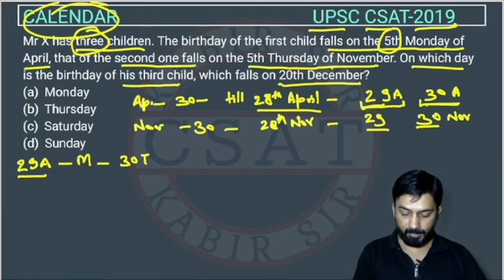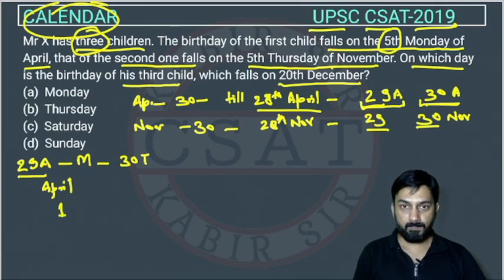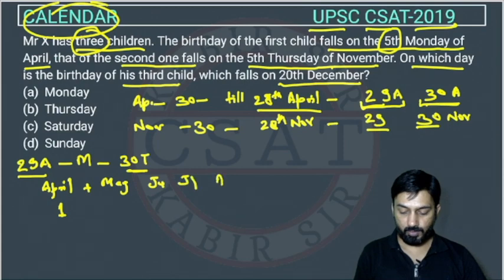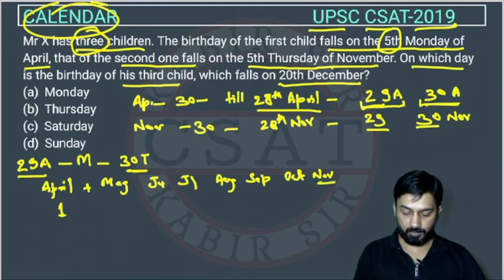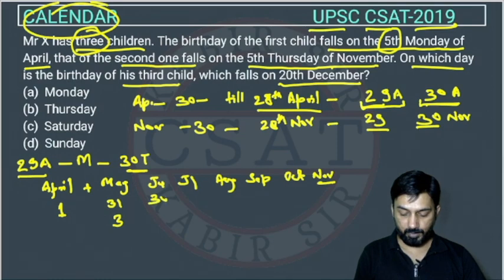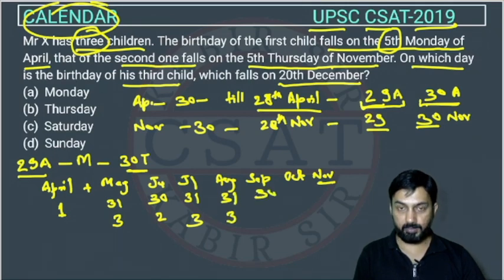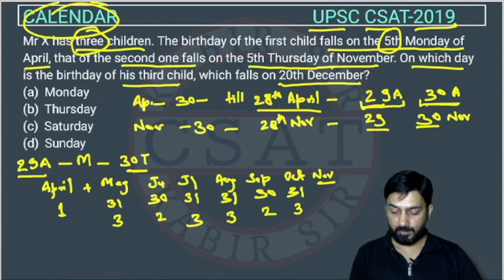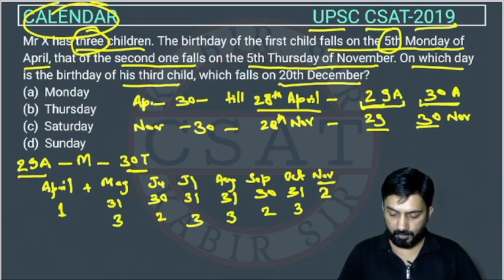On 29th April there is a Monday. We will count the odd days. In April, there is 1 odd day (the 30th). Then May has 31 days — 3 odd days. June has 30 days — 2 odd days. July has 31 days — 3 odd days. August has 31 days — 3 odd days. September has 30 days — 2 odd days. October has 31 days — 3 odd days. And for November up to the 29th itself, there is 1 odd day.